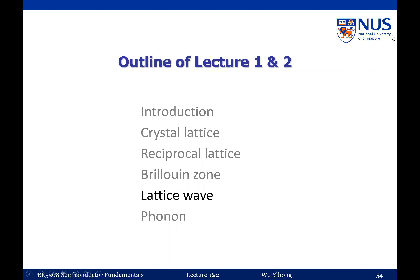This is lecture two. In lecture one, we talked about the lattice structure of crystals. When we discuss lattice structure, we assume that the atoms are stationary and not moving at all. This only happens at absolute zero temperature, which can never be achieved. You can reduce the temperature to a very low value, but it will not go down to zero.